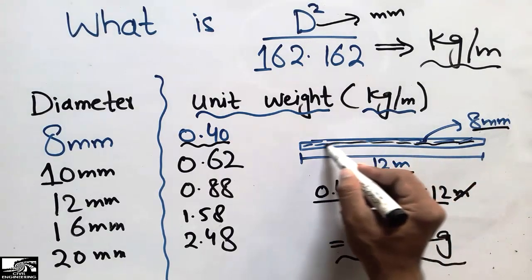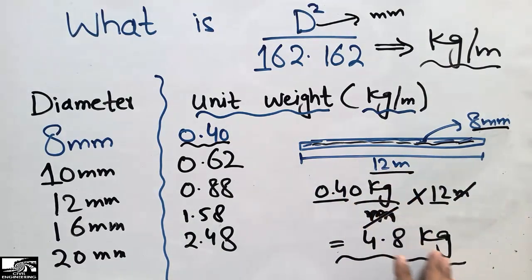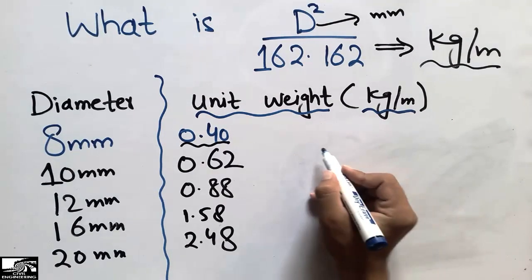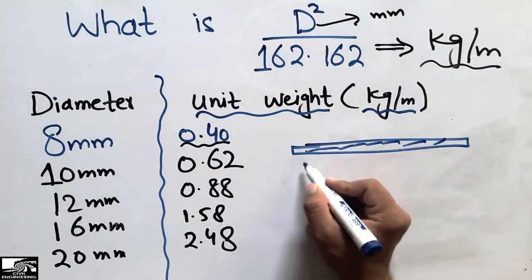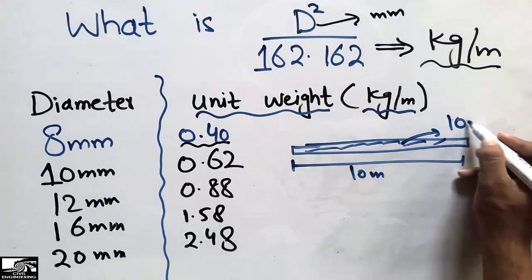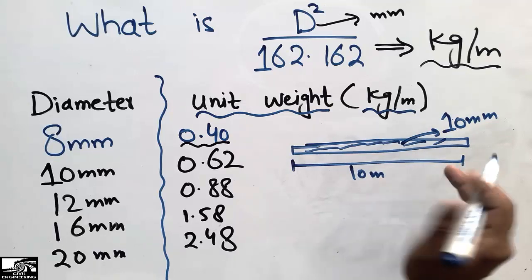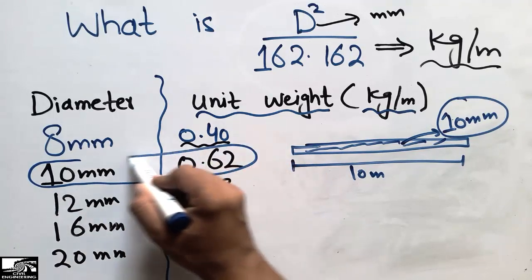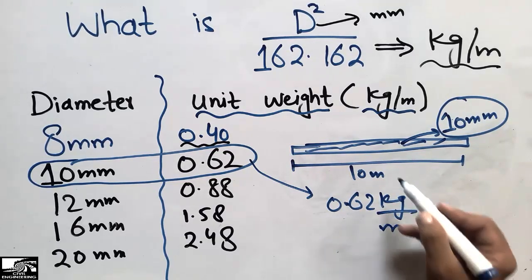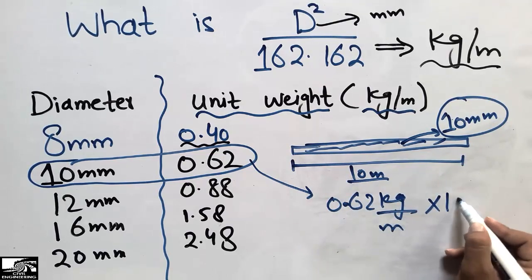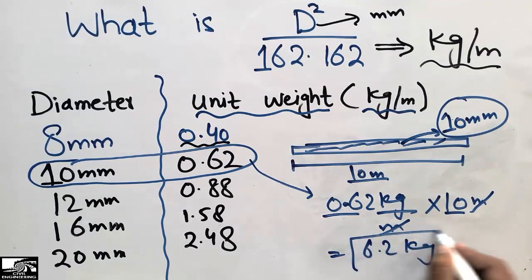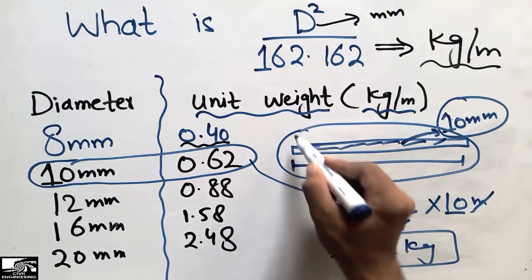Let's do another example. Consider a 10 millimeter bar with a length of 10 meters. We know the unit weight of the 10mm bar is 0.62 kg/m. Multiplying 0.62 kg/m by the total length of 10 meters, the meter units cancel and we get 6.2 kilograms. So 6.2 kg is the weight of a 10mm steel bar that is 10 meters long.